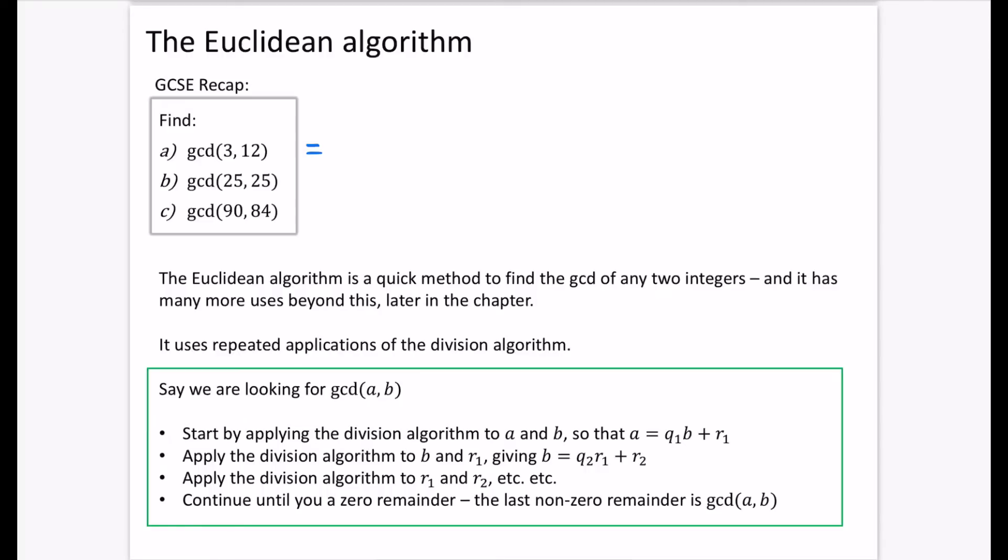So we're going to do the greatest common divisor of 3 and 12. Well, 3 divides 3, and 3 also divides 12. So the greatest common divisor is 3. Now, the greatest common divisor of 25 and 25, well, 25 divides them both. So their highest common factor is 25.